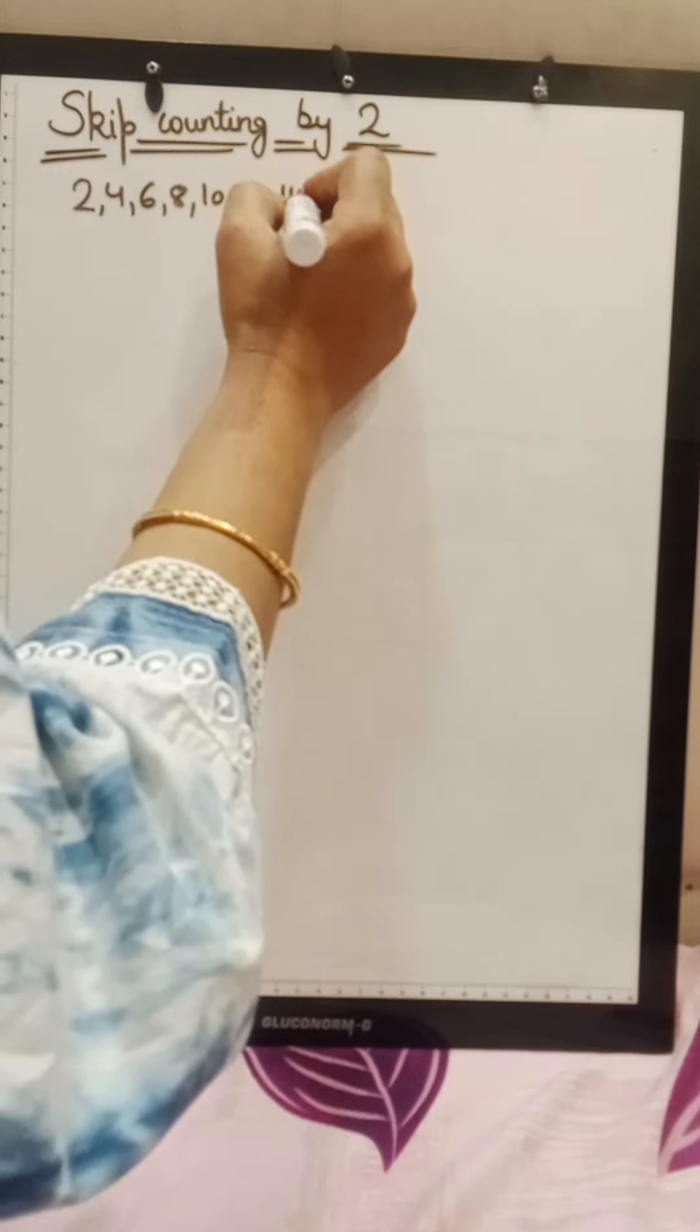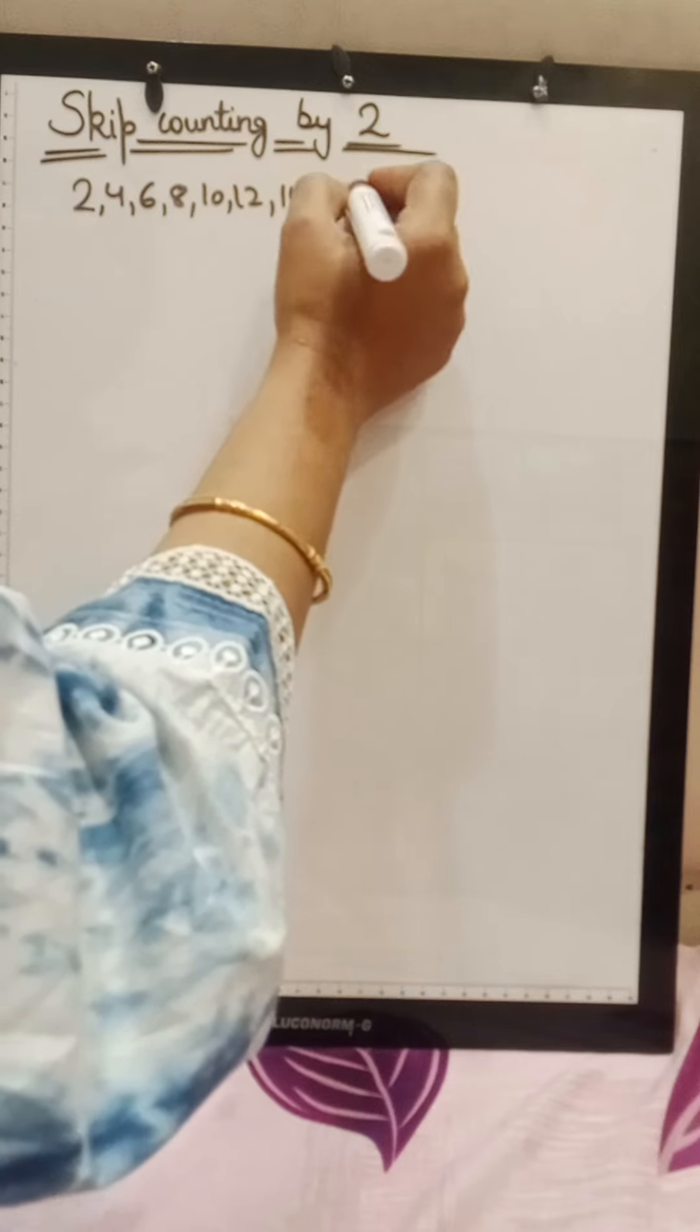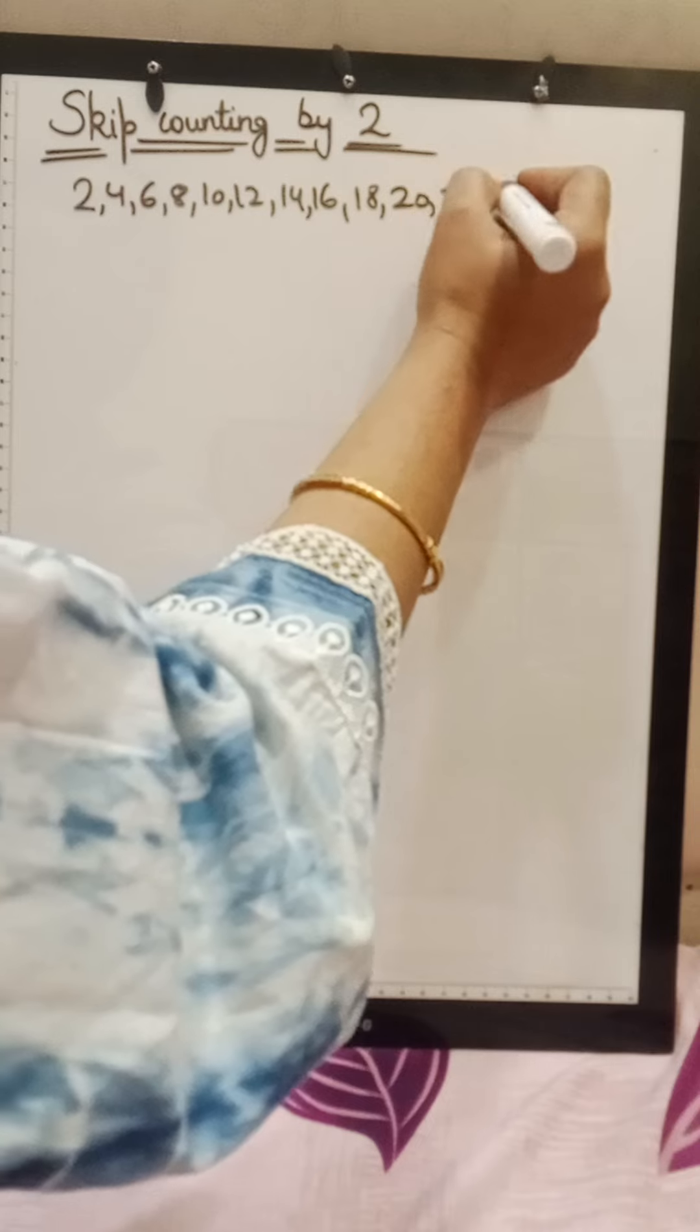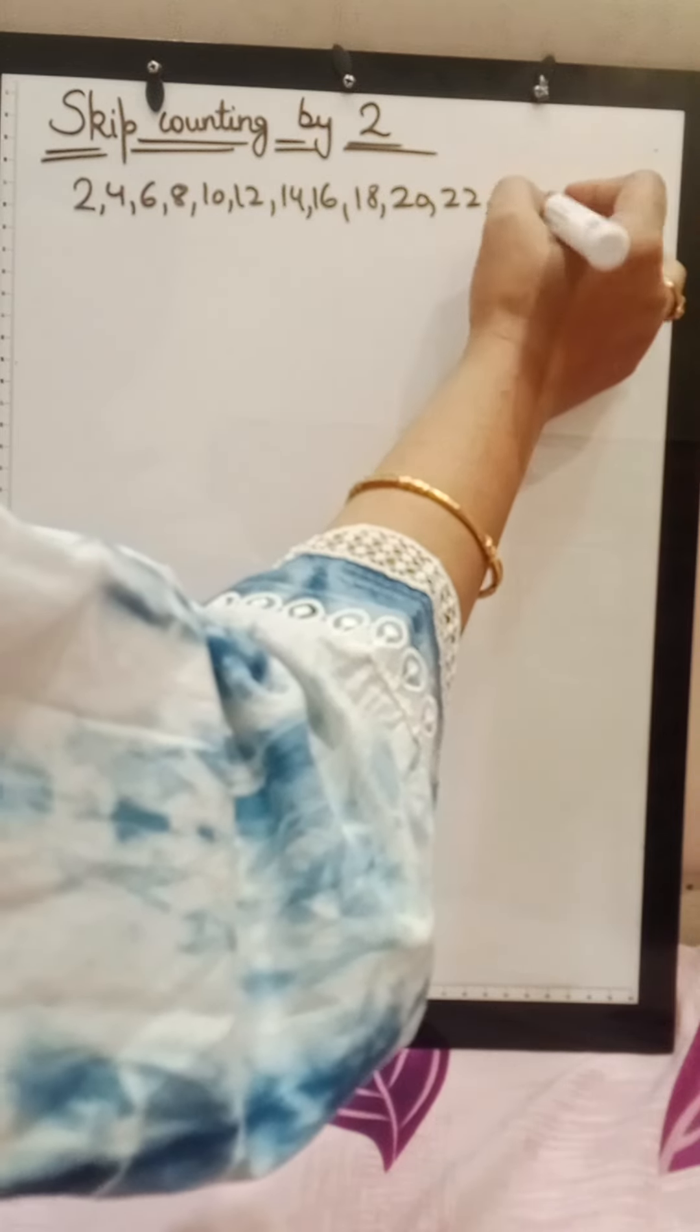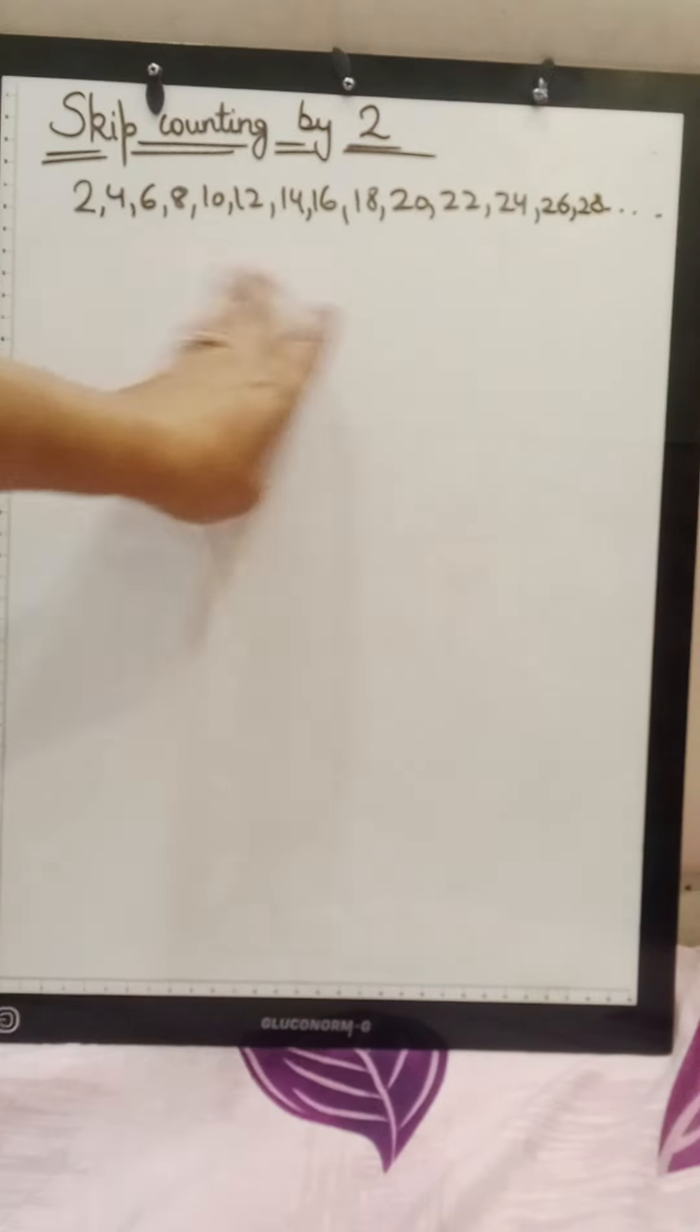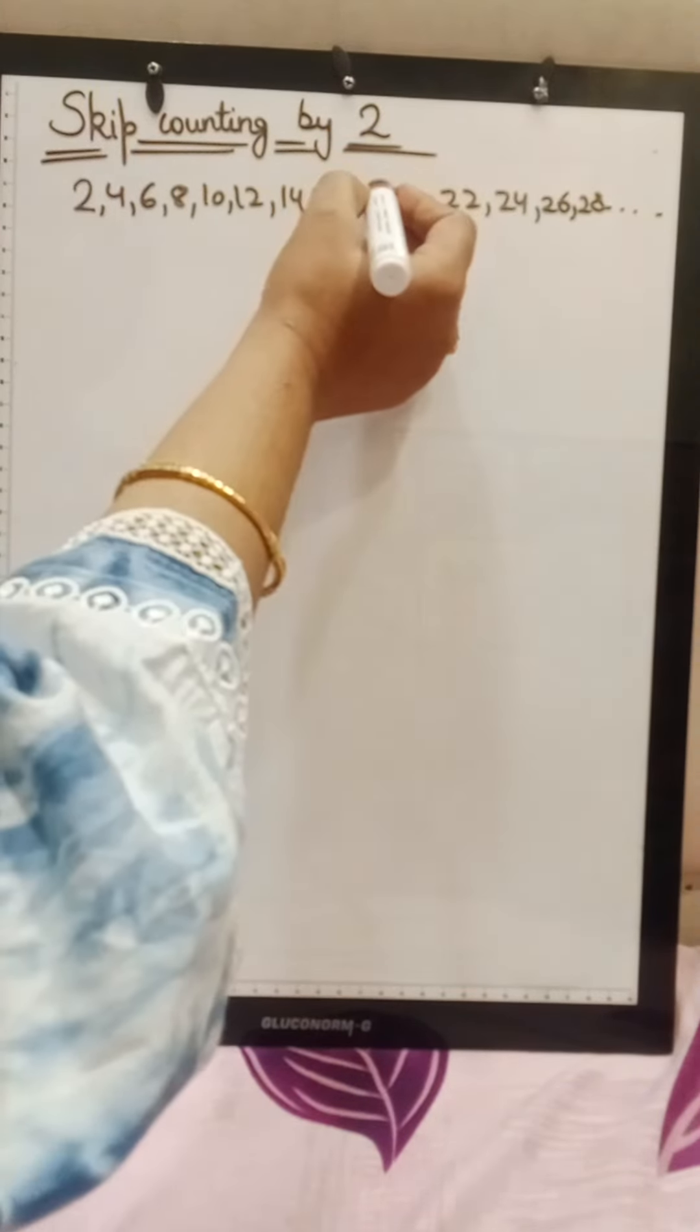12 plus 2 is 14, 14 plus 2 is 16, 16 plus 2 is 18, 18 plus 2 is 20, 20 plus 2 is 22, 22 plus 2 is 24, 26, 28 and so on. We are going to add 2. Basically, we are going to become 2.